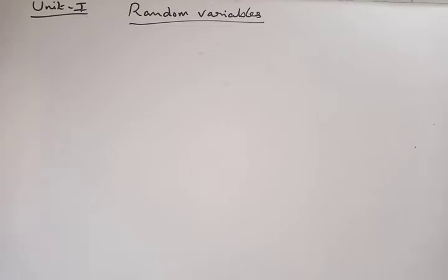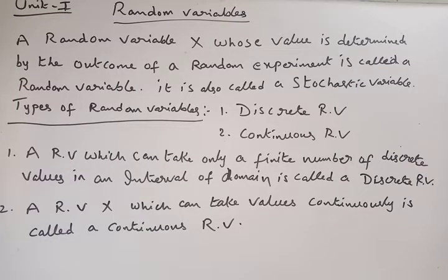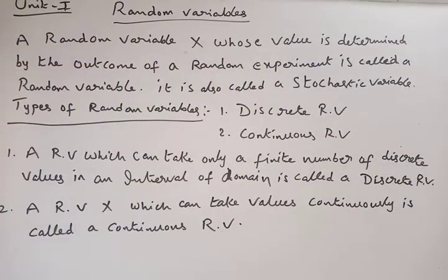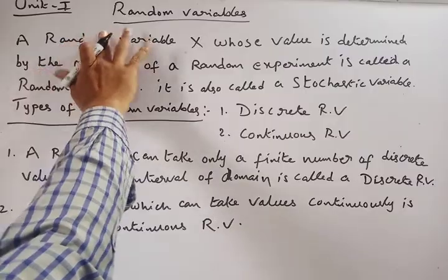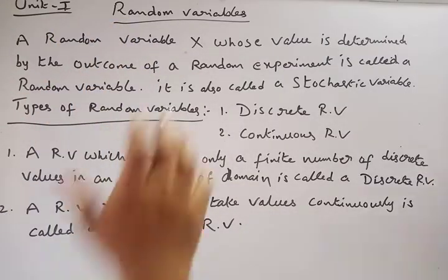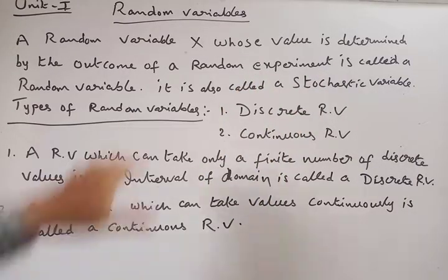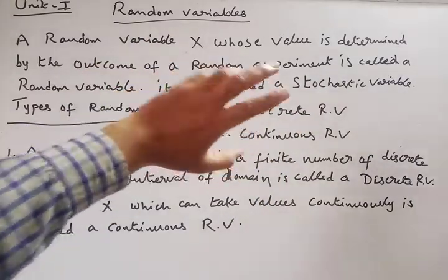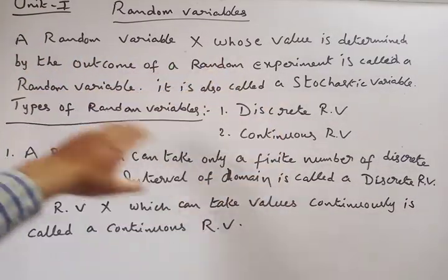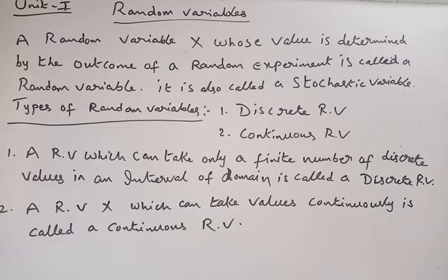First topic: random variables. See the definition of random variable. A random variable, capital X, whose value is determined by the outcome of a random experiment is called a random variable. It is also called a stochastic variable.